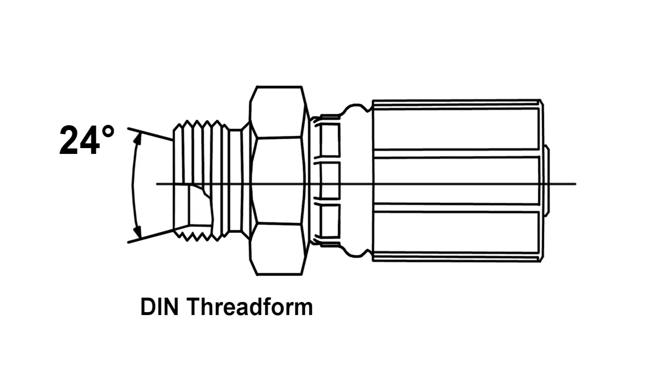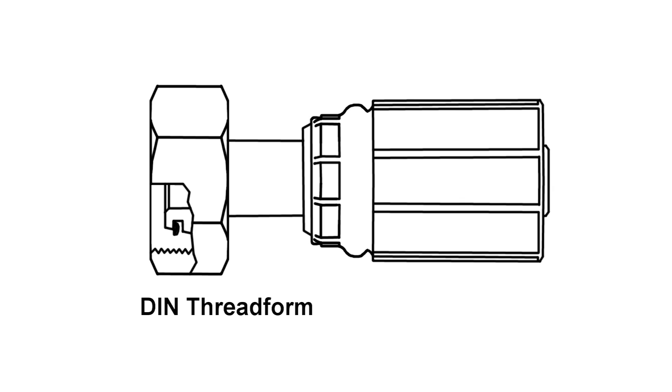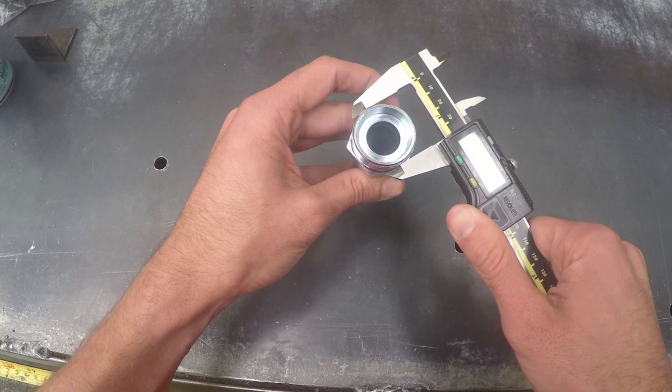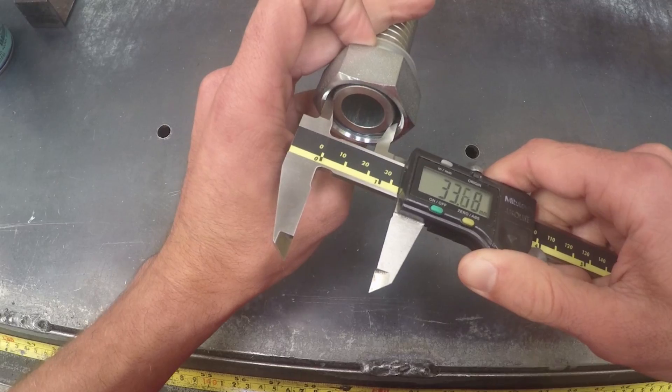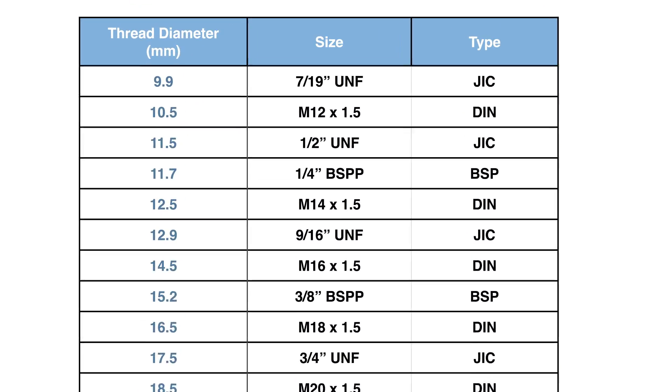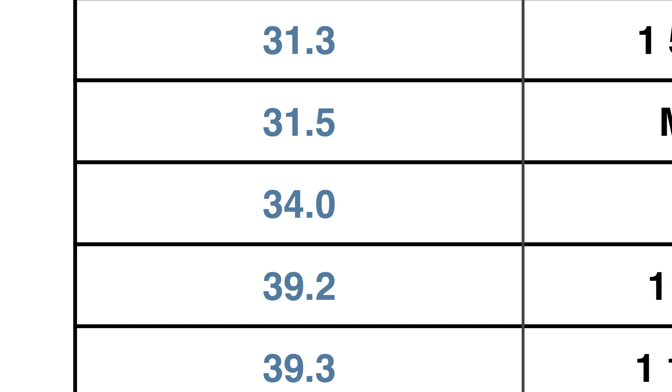Metric uses a 24 degree cone seat, sometimes with an O-ring seal. To identify the size of the thread, you would first measure the OD of the male or ID of the female. Once you have established the size you can then consult a thread chart.